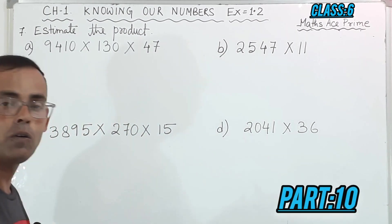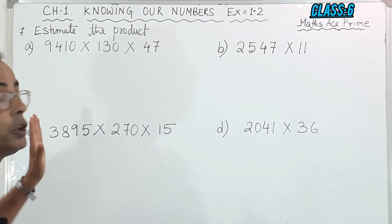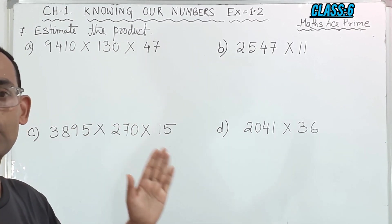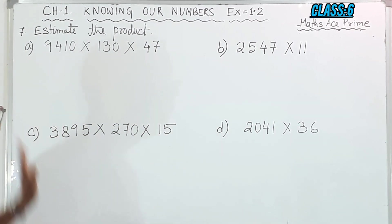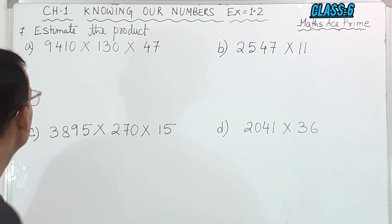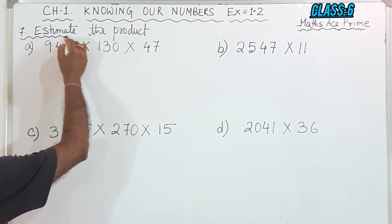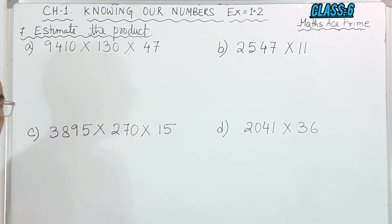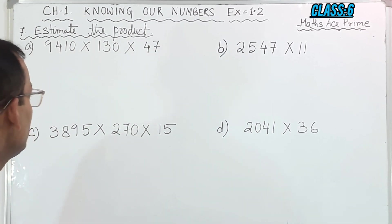So till our last part, that is Part 9, we solved questions up to question number 6, and today we are going to solve question number 7. So let us see what they are asking in the question: Estimate the Product. So you have to find out the estimated value of the product.